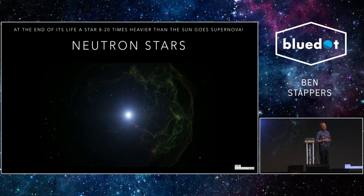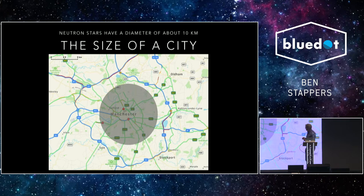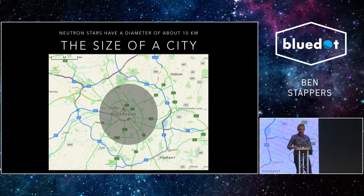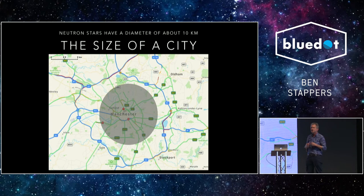These neutron stars are incredibly small. Remember we started off with a star that was something like around 8 to 20 times the mass of the sun, and we've compacted it down to an object that is actually about the size of a city. To absolute true scale, this is the size of a neutron star compared to the city of Manchester. So if one was to fall on your city, this is where I would live outside of basically. This means that we've compacted one and a half solar masses - one and a half times the mass of our sun - down into a radius of just 10 kilometers.